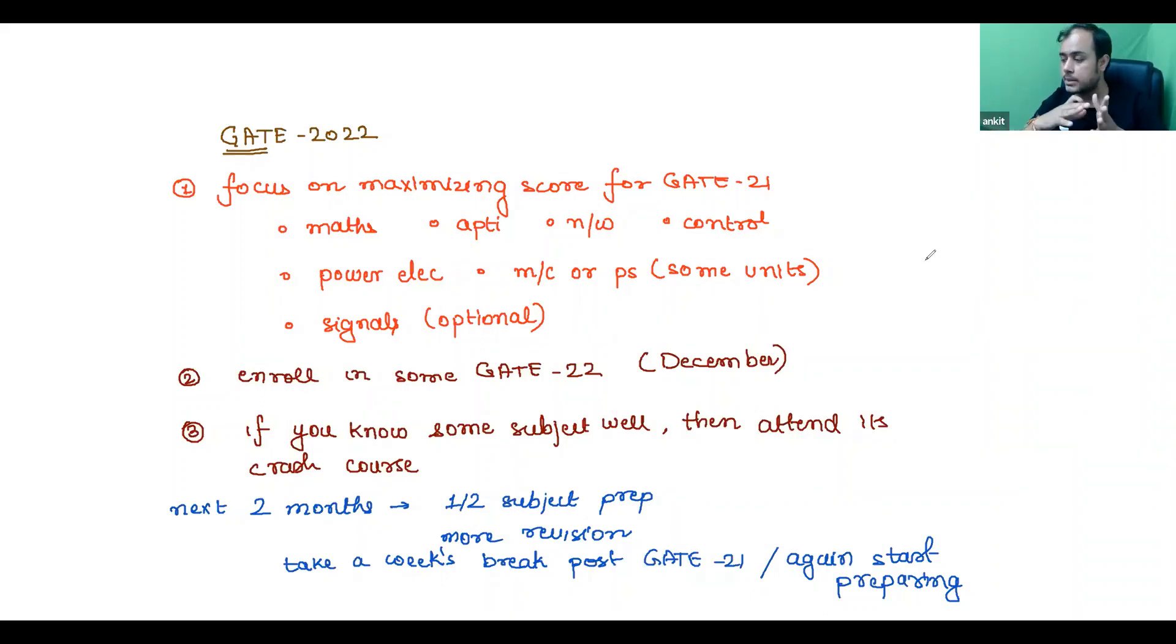Like suppose if someone solves a previous year book and after that they are able to score well in the test series, so that means they are on the right track. They need not practice anymore. But if someone solves previous year as well as practice questions on Unacademy as well as DPP also, and still they are not able to get marks, that means that much practice is not sufficient. And also I focus more on quality of practice rather than quantity. Like if you are learning from each and every question, then quality is very very good and your education level, preparation level, will keep on increasing.